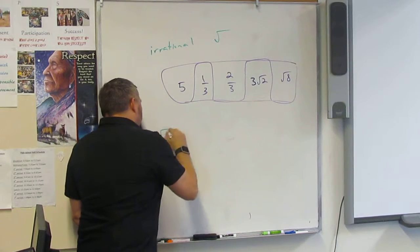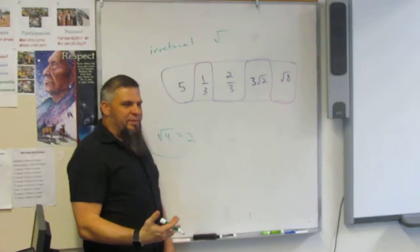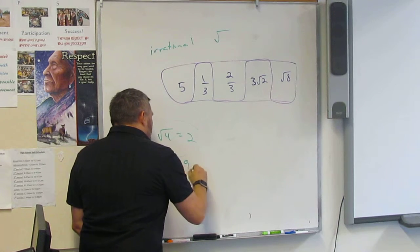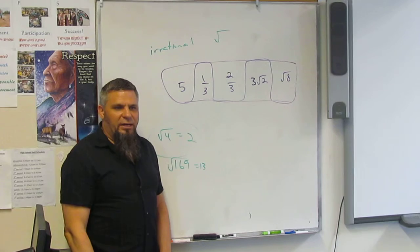Square root of four equals two. That's rational. There's nothing irrational about that. The square root of 169 is 13. There's nothing irrational about that, right?